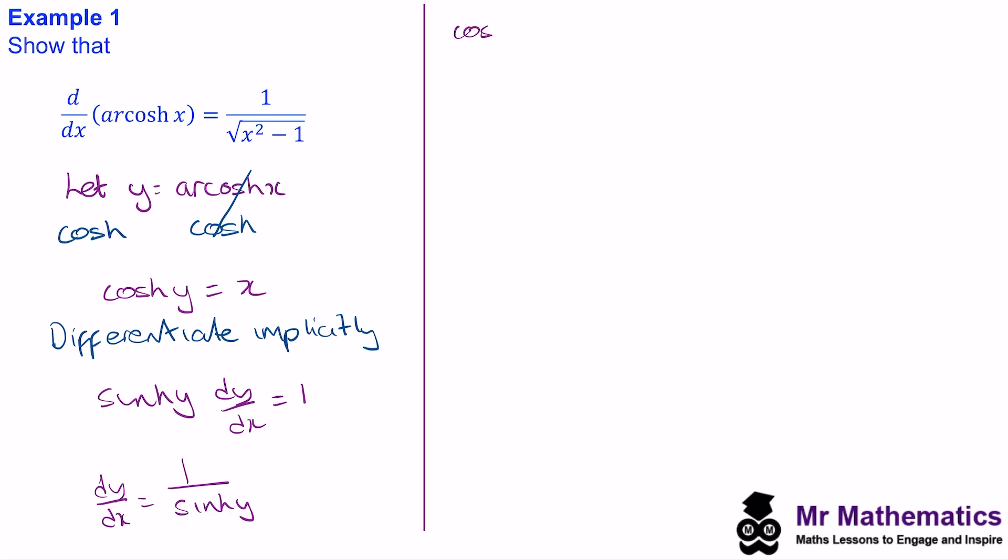So cosh squared y minus sinh squared y is equal to 1. We need to rearrange this equation to make sinh of y the subject. So we get sinh squared y is equal to cosh squared y minus 1. And now we need to take the square root of both sides. So sinh y will equal plus or minus the square root of cosh squared y minus 1.